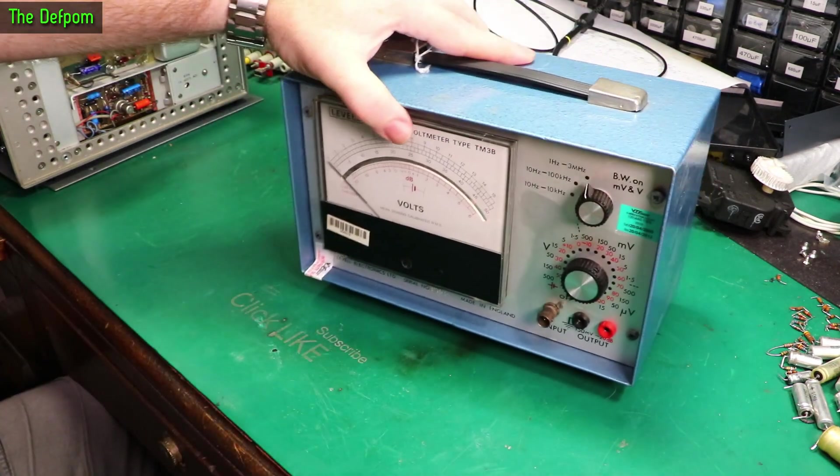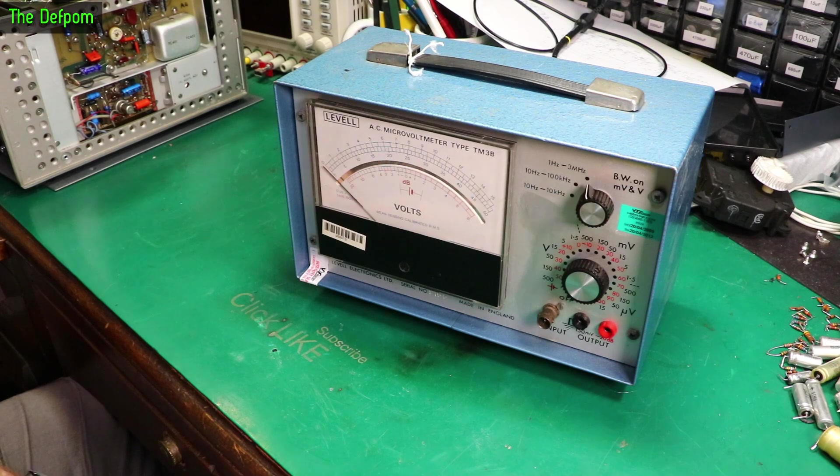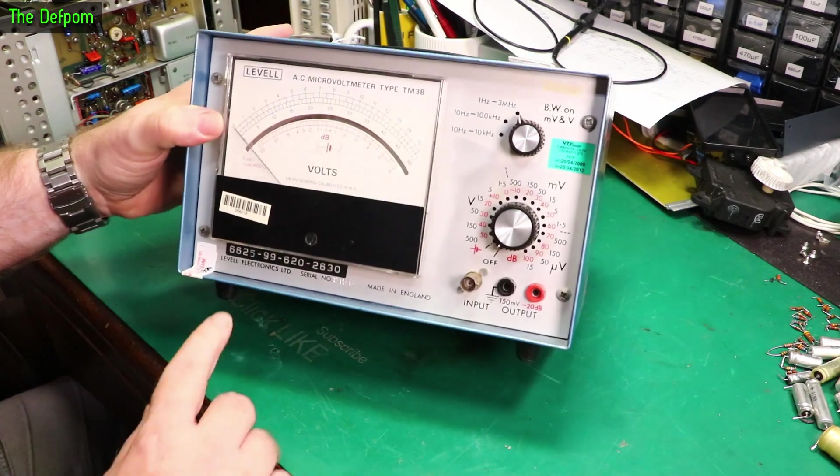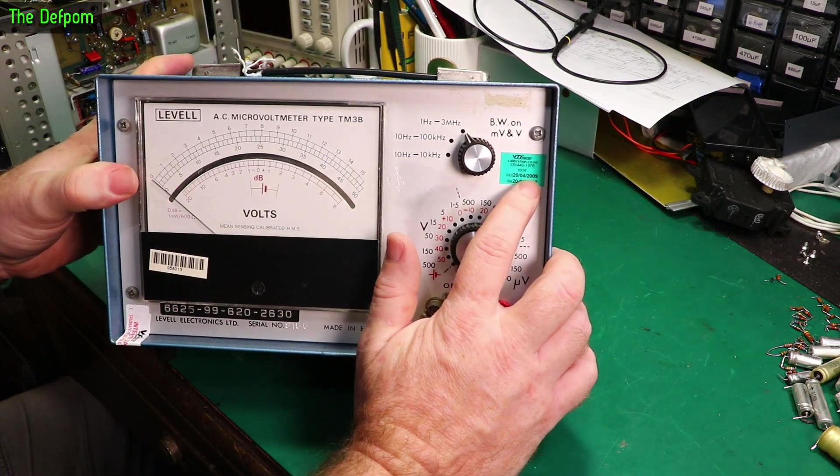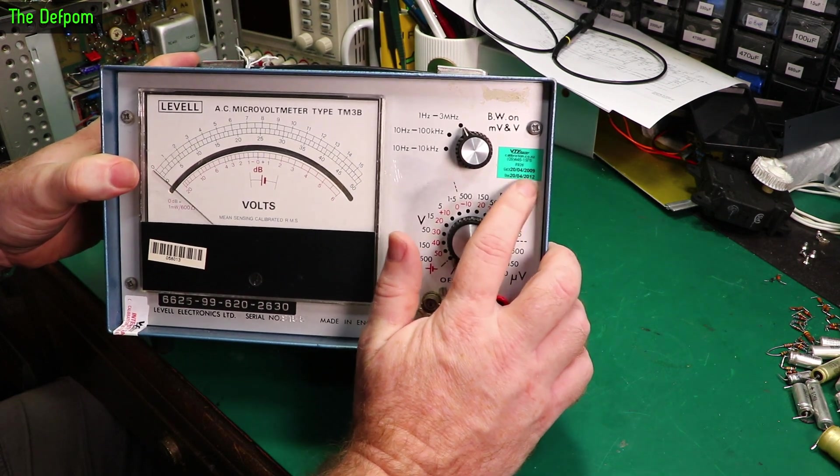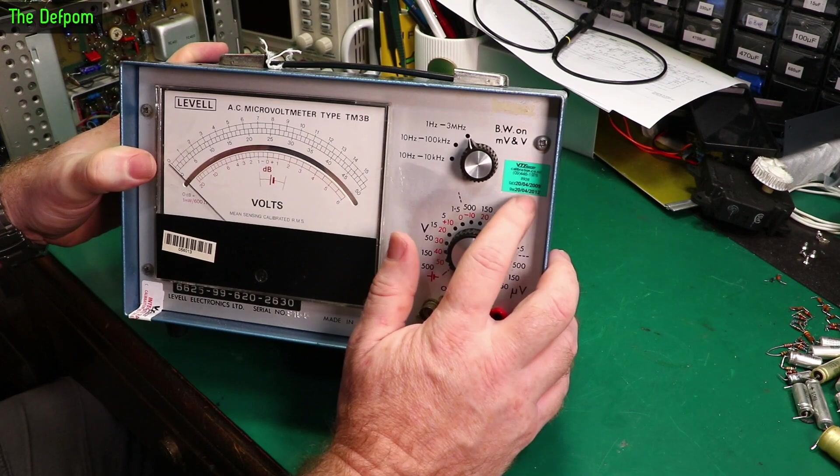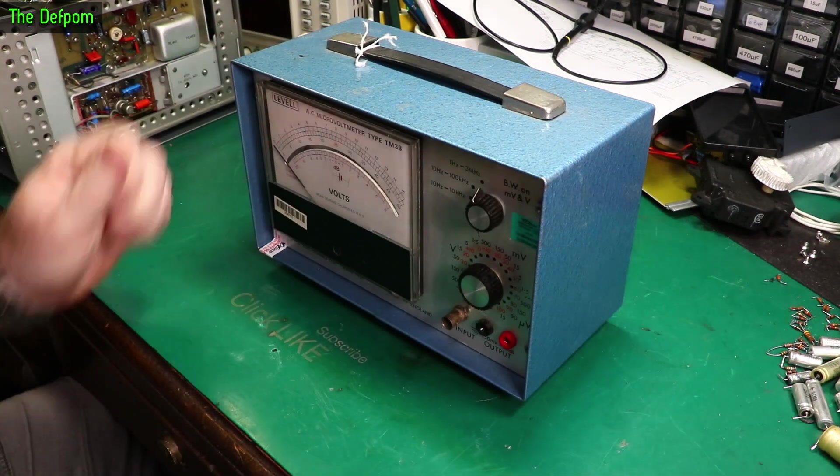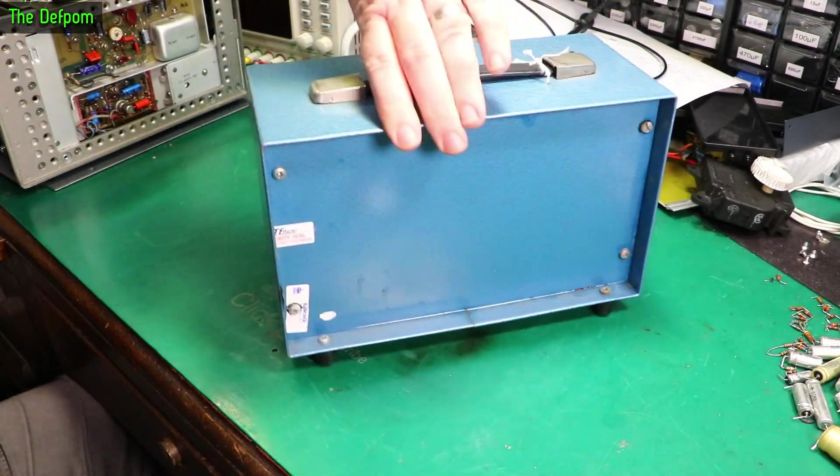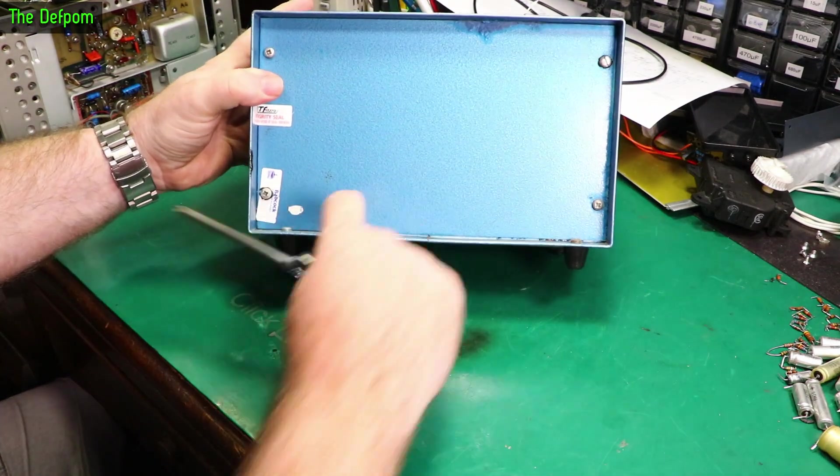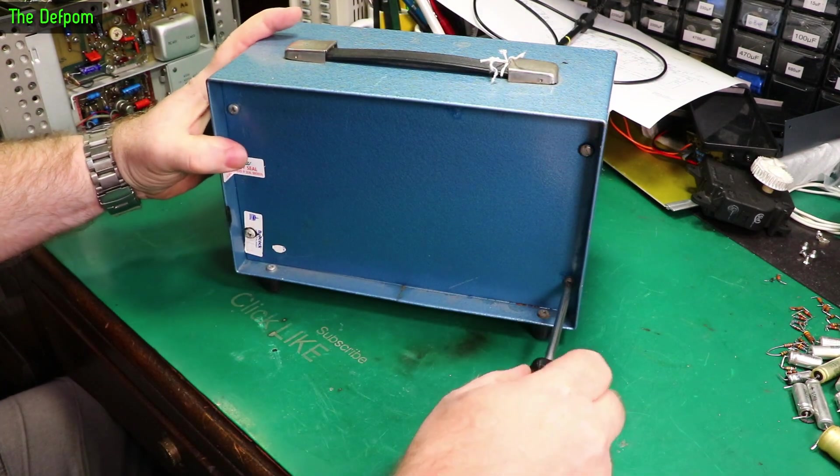It's got batteries in it so we need to pull this apart and check the battery situation. The calibration date was 2009 to 2012 with the same seals, which means this probably has the same battery from 2009, which is 14 years ago. I'll take the back panel off.